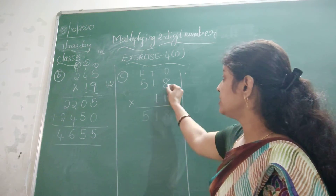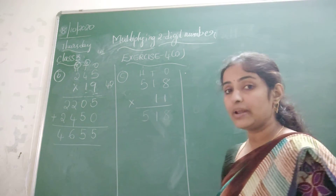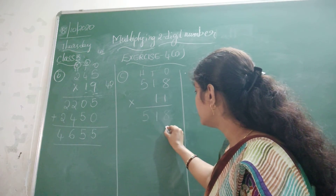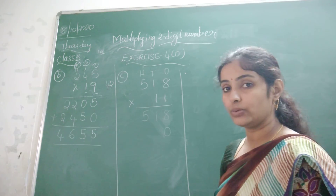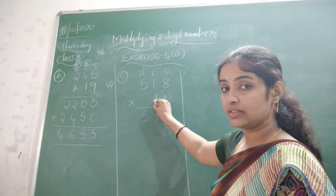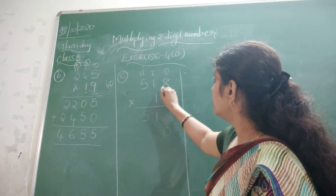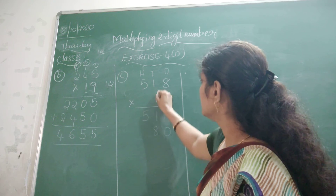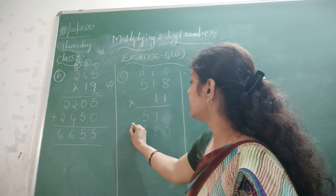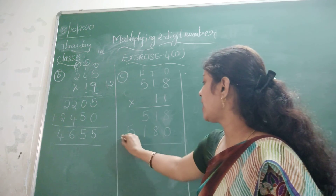Now I need to multiply with the 10's place. To multiply with the 10's place, write 0 in the 1's place, then start multiplying with the 10's place number. 1 × 8 is 8. Then 1 × 1 is 1. Then 1 × 5 is 5.